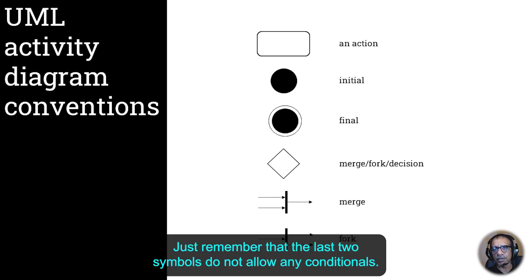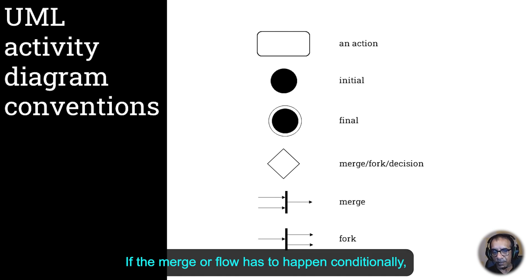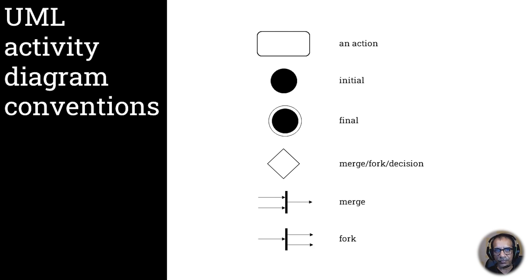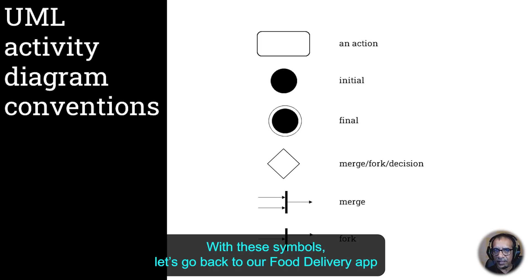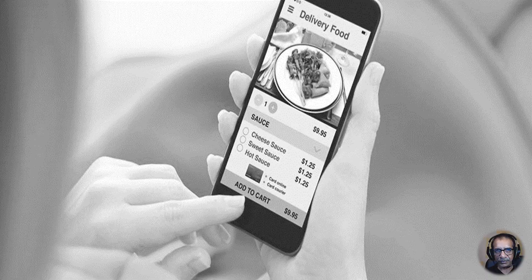Just remember that the last two symbols do not allow any conditionals. If the merge or fork has to happen conditionally, you have no choice but to use the diamond box. With these symbols in mind, let's go back to our food delivery app and see how we can use them to create a simple activity diagram.